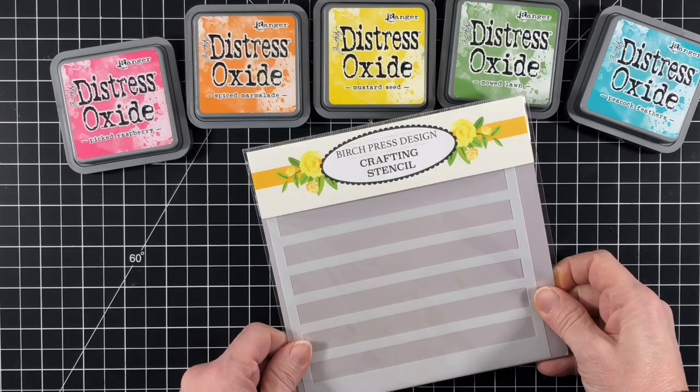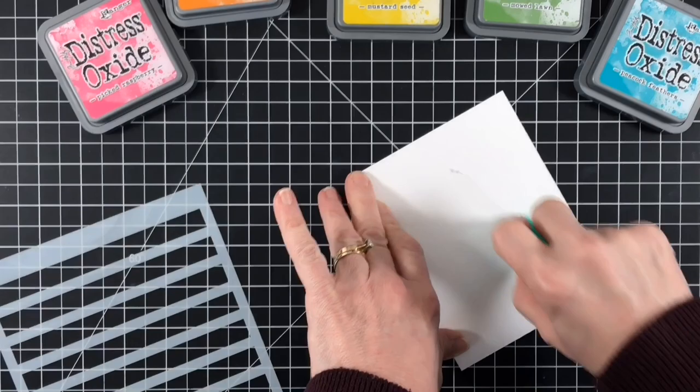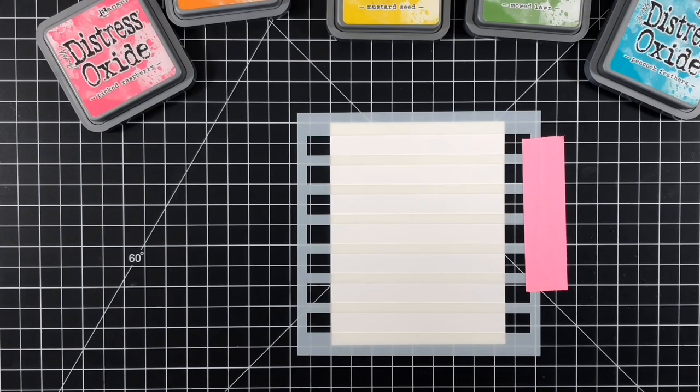Hey there, it's Tracy and today we're going to do a little ink blending. I'm using the new Bold Stripe Stencil from Birch Press and I'm going to start off by putting some repositional adhesive on the back of my panel and taping it down to my craft mat.